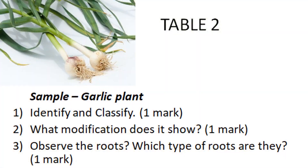In the second part, a sample of a garlic plant was kept. The question was: identify, write the modification, and observe the roots — what kind of roots does it show? You should write that the garlic plant is a monocot flowering plant. It shows modification of leaves — leaves are food-storing leaves. The roots are fibrous roots because it is a monocot plant.